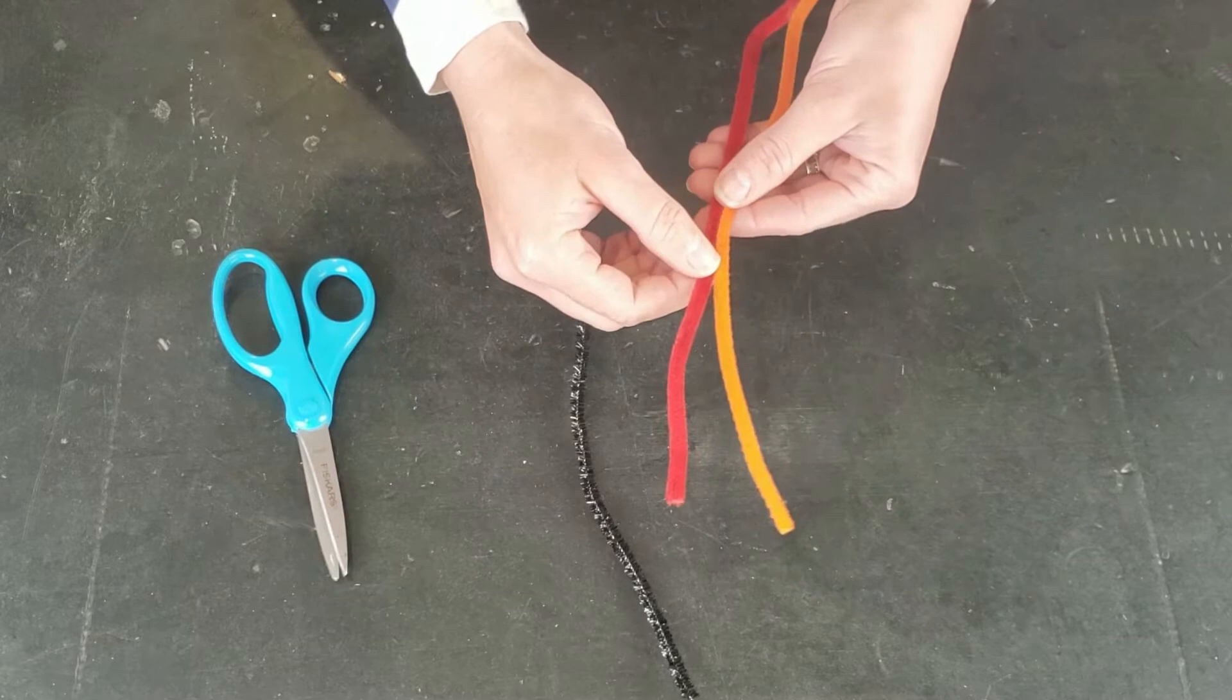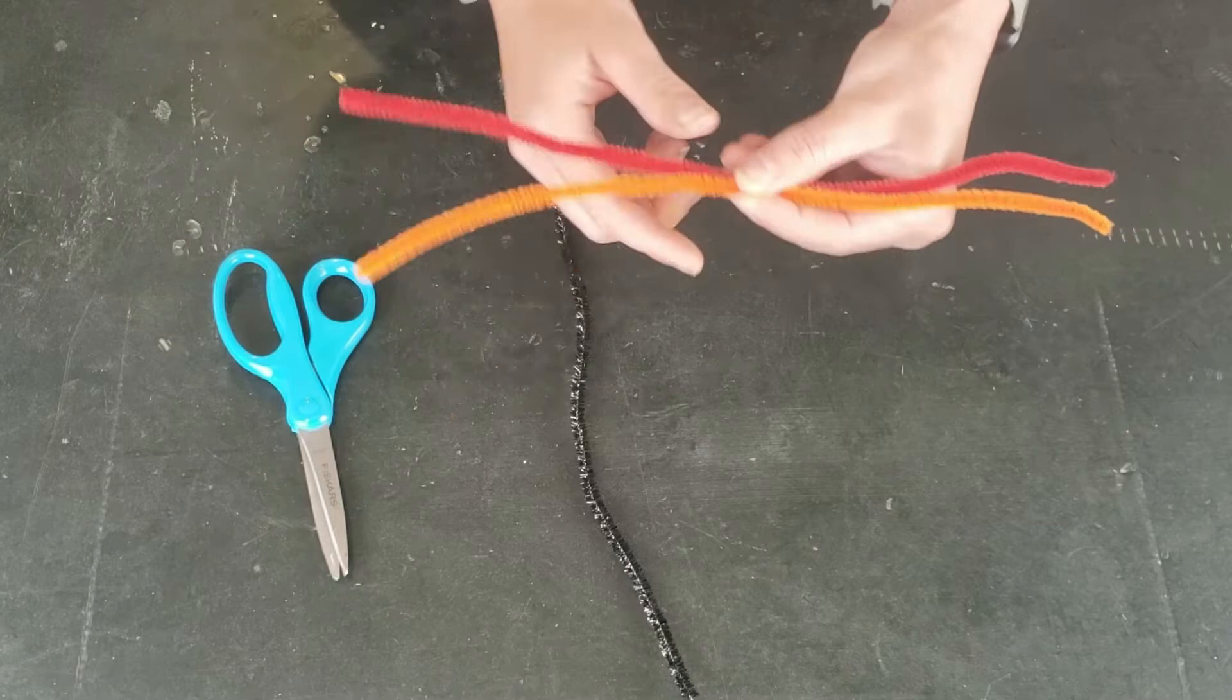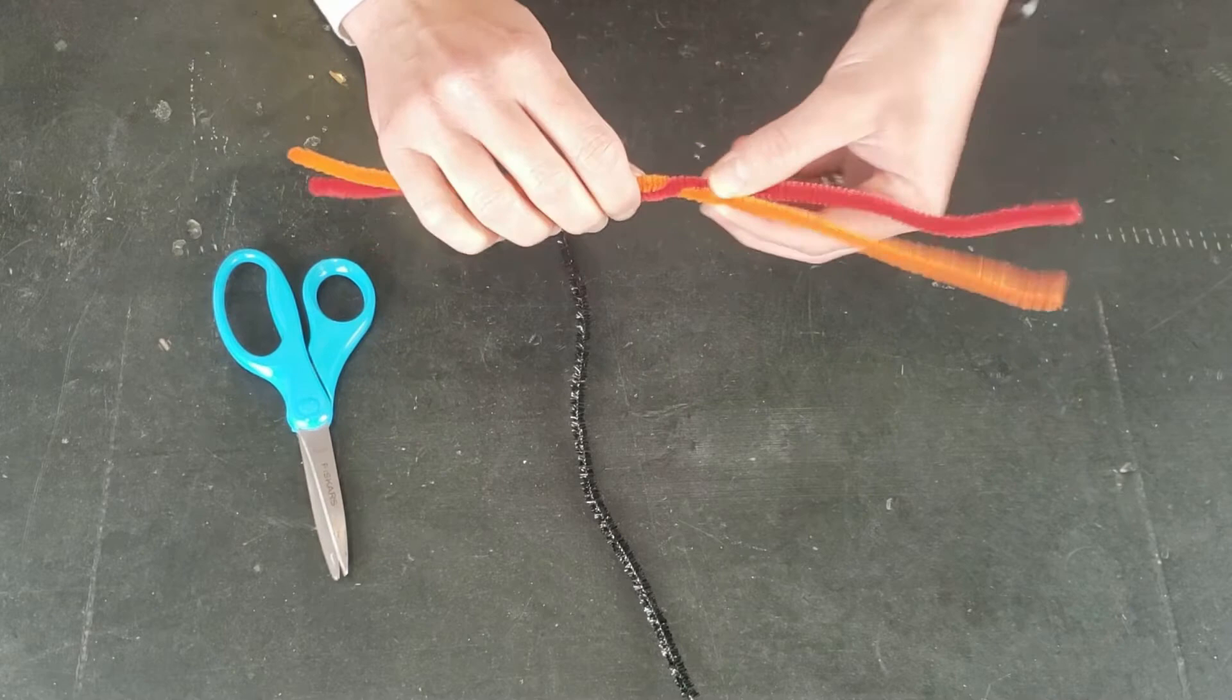To get started, you'll take your two colorful pipe cleaners and line them up parallel to each other, side by side, and then we're just going to lightly twist them together in the middle just a few times to get them to connect.